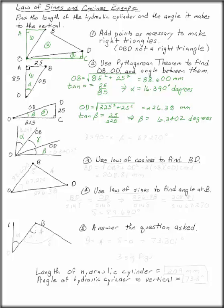if this is the alpha we just found, was 16.390 degrees, and this is the beta we just found, 6.3402 degrees, then gamma is 90 minus alpha minus beta, 67.270 degrees.